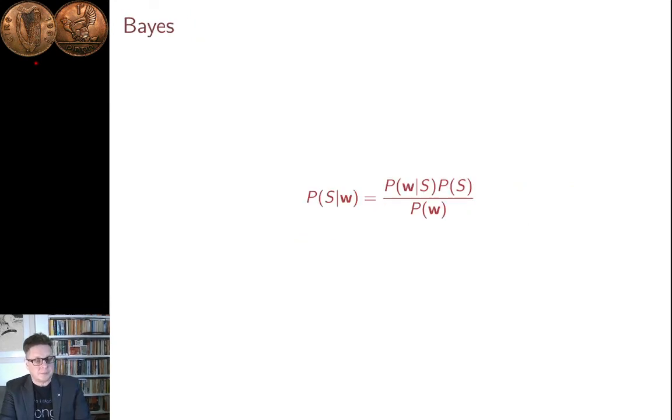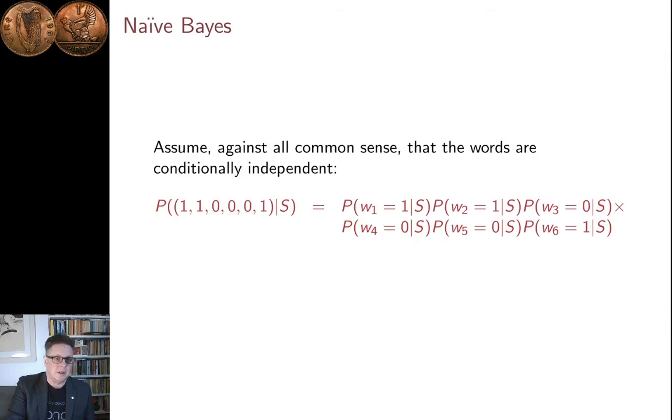And so, what do you do? Well, for a start, you can turn everything around using Bayes. So, this is Bayes' theorem. It says the probability that an email is spam given the characteristic W is the probability that it has the characteristic W given spam, multiplied by the probability of spam, divided by the probability of W. That's a start, but the probability of W given spam is no easier to estimate than the probability of spam given W straight off. And so, what we do is make an assumption.